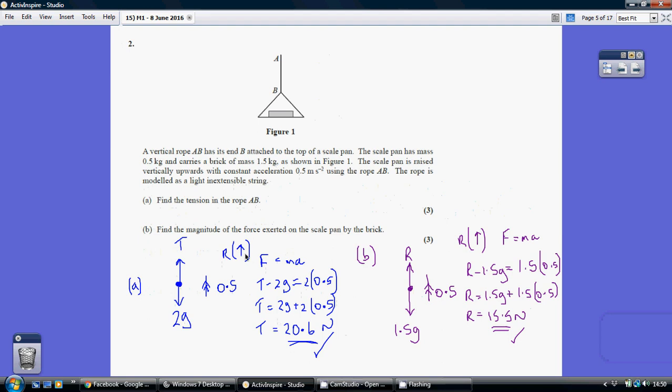Now for part B we're just going to look at it from the point of view of the brick only. So the brick has got a mass of 1.5 so its downward force is going to be 1.5g. And we've got our upward force of R.